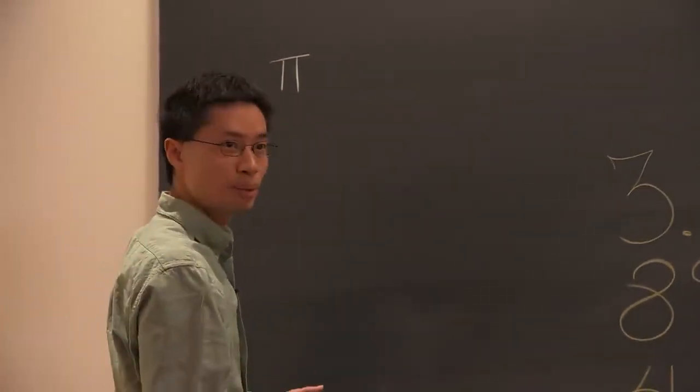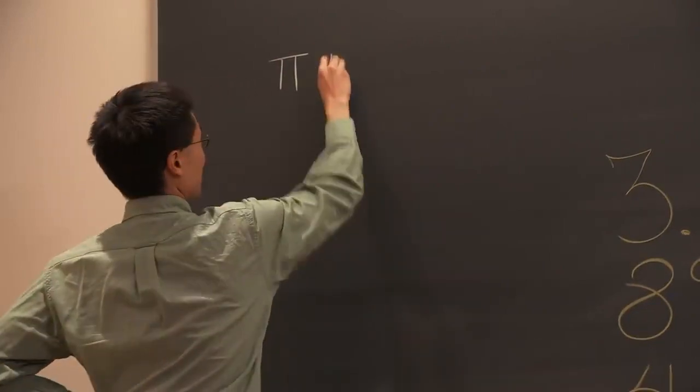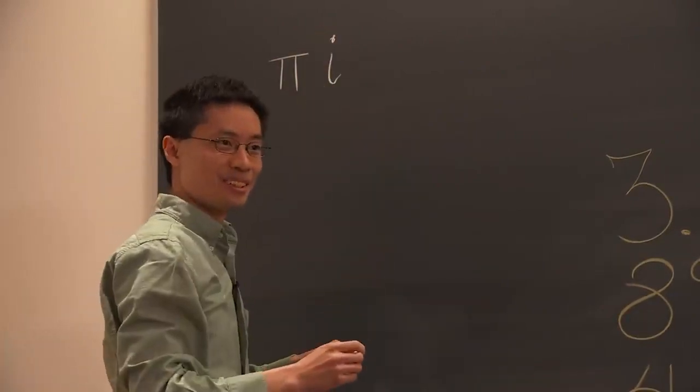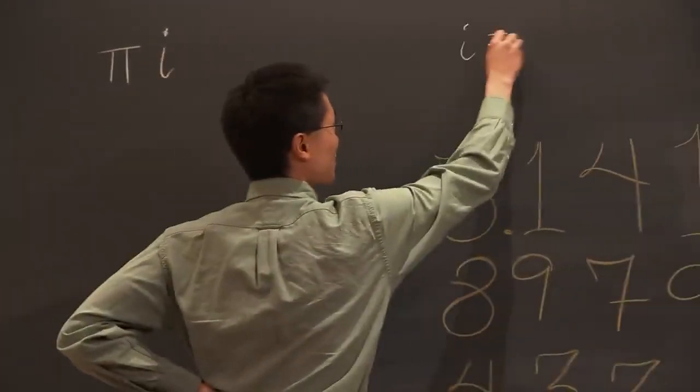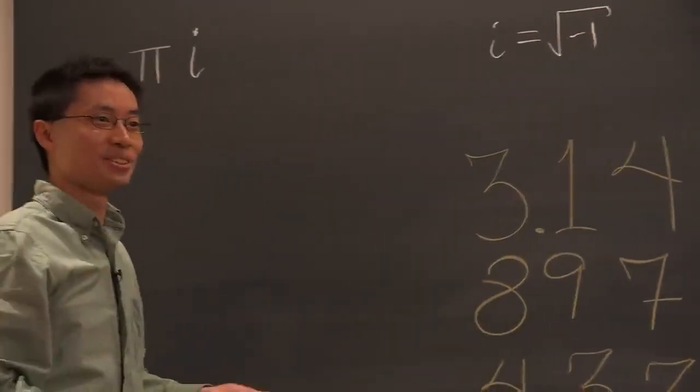We already know what pi is, right? There's another number in math, which is called i. This is the square root of minus 1. So i is equal to the square root of minus 1, which you're not allowed to do.